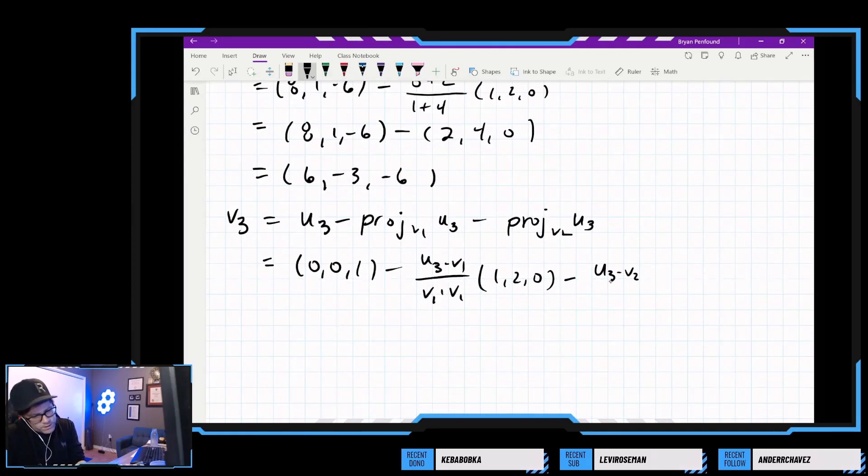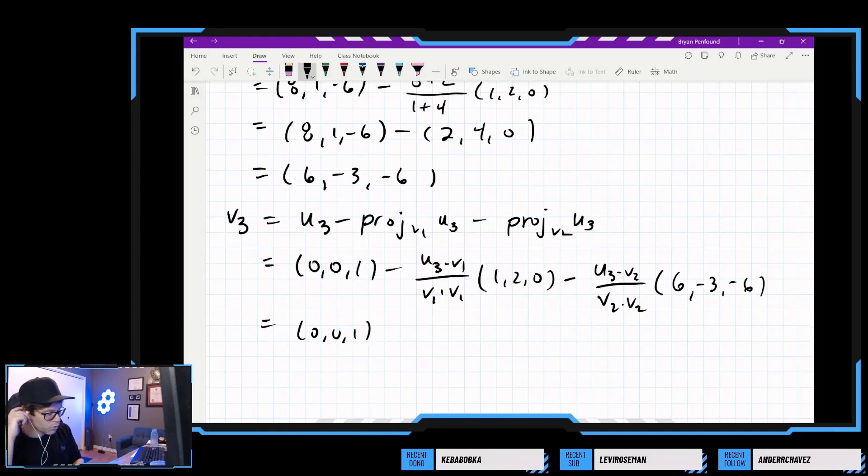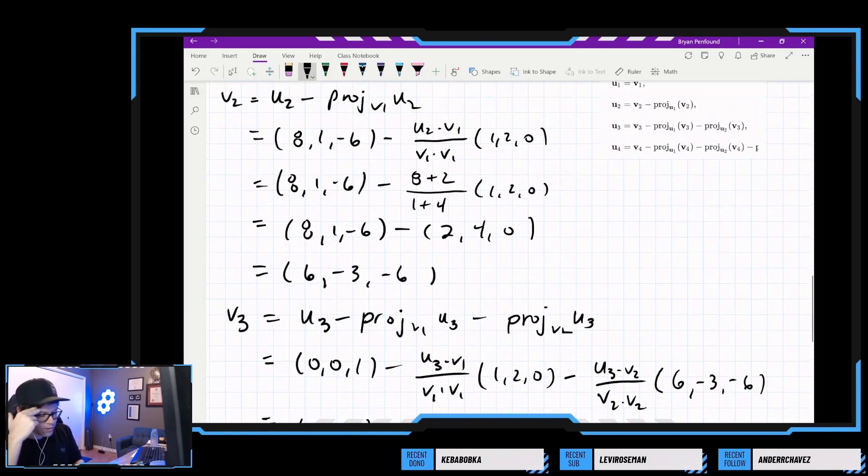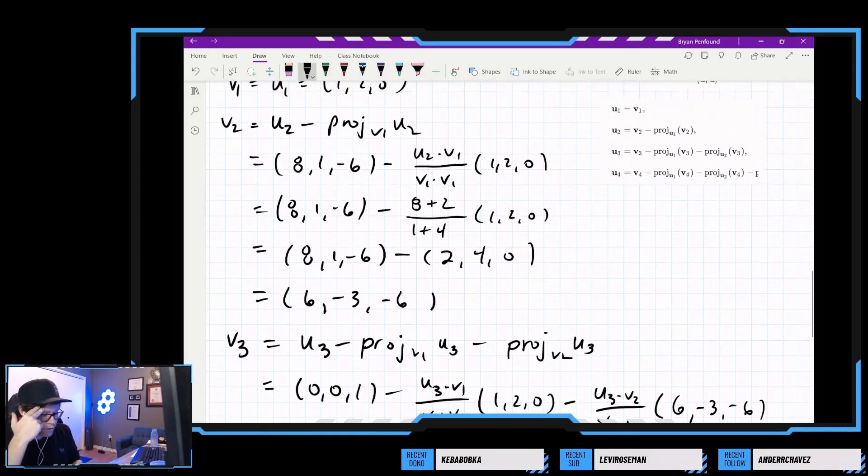Here we need u3 dot v2 over v2 dot v2, and v2 we just found as 6, negative 3, negative 6. So we get 0, 0, 1. I suspect that these dot products will probably end up being 0. So 0, 0. So we're really just looking at the third component.